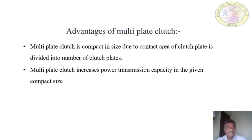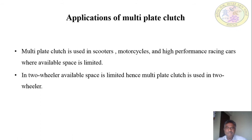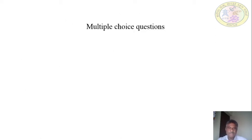Advantages: The multi-plate clutch is compact. By dividing the clutch plate into a number of plates, the size is reduced while the torque transmitting capability is increased compared to a single plate clutch of the same size. Applications: multi-plate clutches are used in scooters, motorcycles, and high-performance racing cars, making them the most widely used type of clutch in two-wheelers.